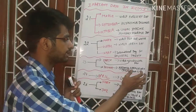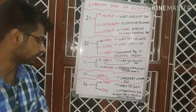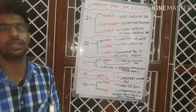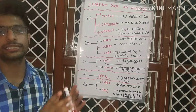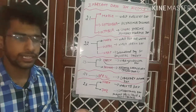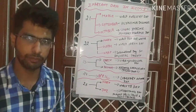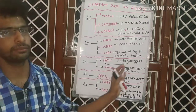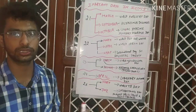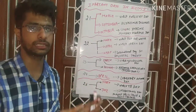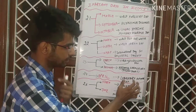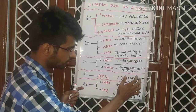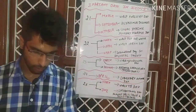24 April is World Laboratory Animal Day, commemorating the sacrifice of animals in laboratory research. Mice and rats are mainly used for scientific purposes, though dogs, cats, and monkeys are also used in some cases. That is why this day is celebrated as World Laboratory Animal Day.